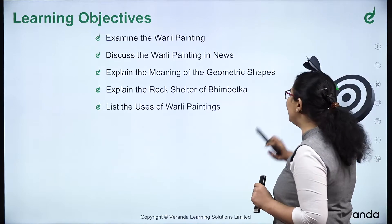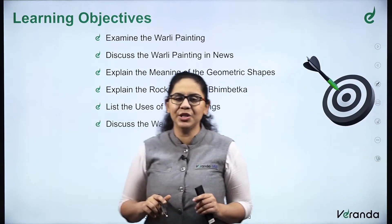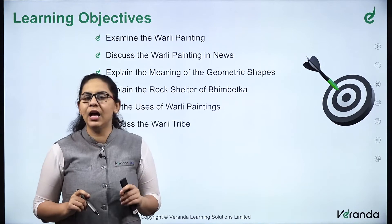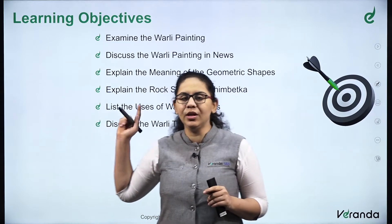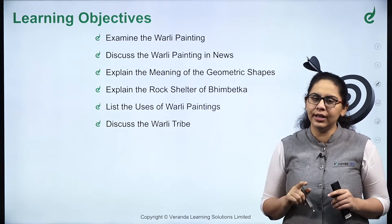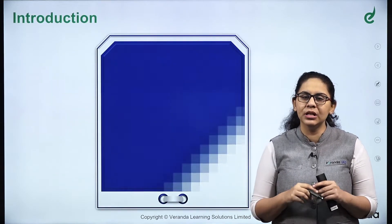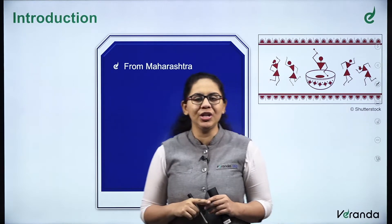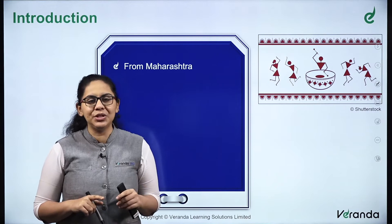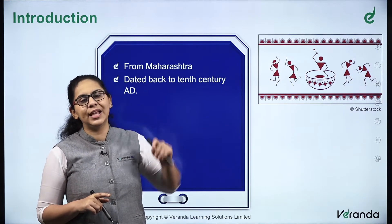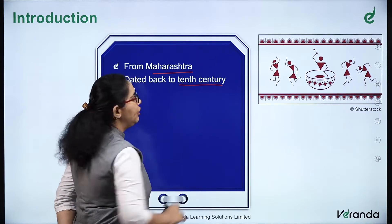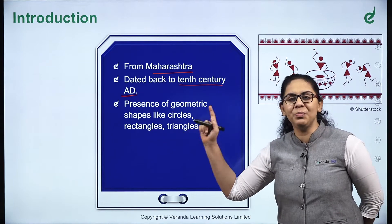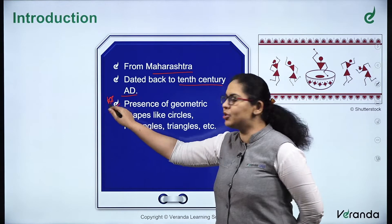We will show you a picture of Varli painting so you can understand the presence of geometric shapes. First and foremost, Varli paintings belong to the state of Maharashtra — important, factual information, please remember. This art form is dated back to the 10th century AD. The presence of geometric shapes — circles, rectangles, triangles — makes it unique. You can identify a Varli painting by these geometric forms.